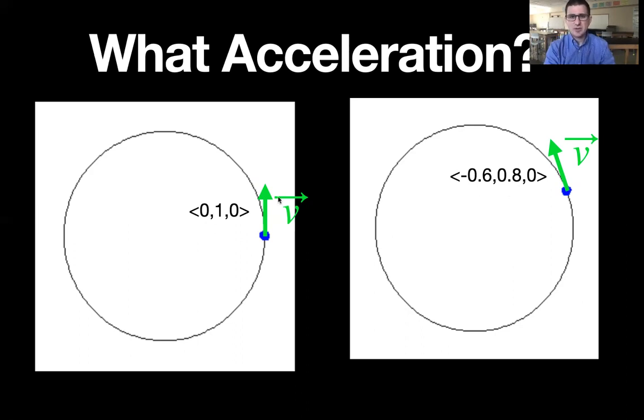So what acceleration did the object experience to get from the velocity at this point to the velocity at this point, using our vector analysis? We can see that the velocity changed, it changed by negative 0.6 in the horizontal direction and negative 0.2 in the vertical direction.